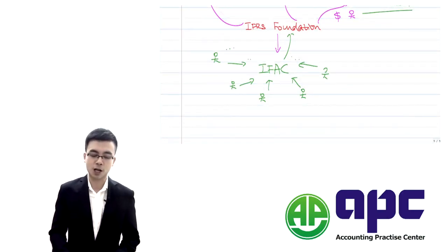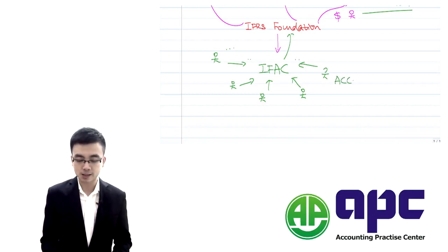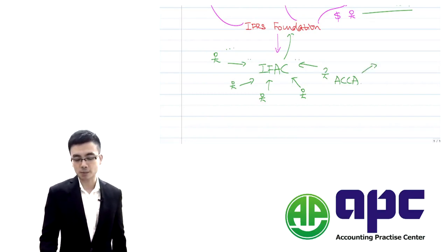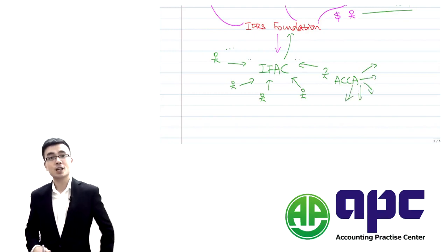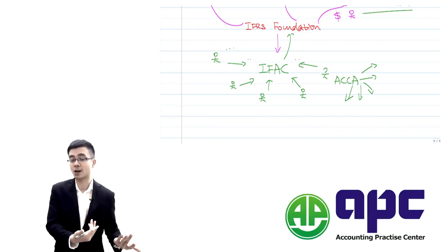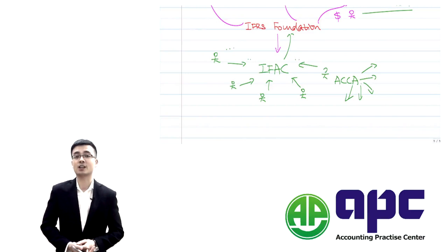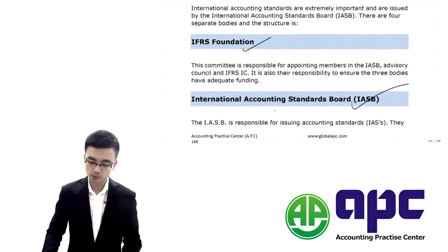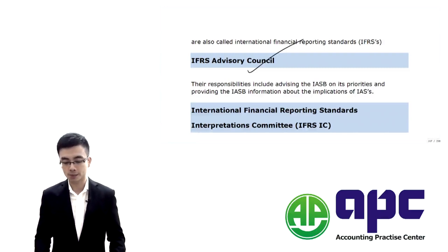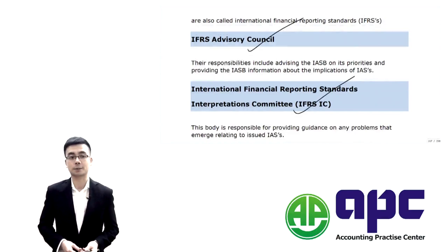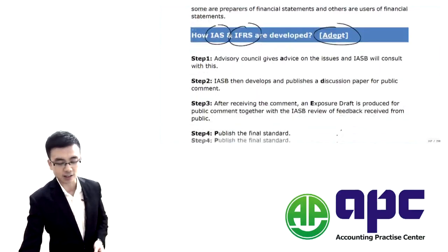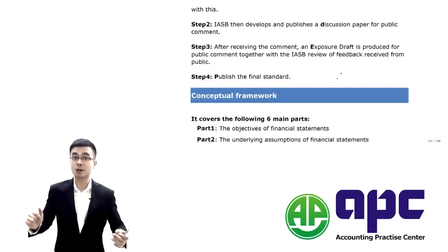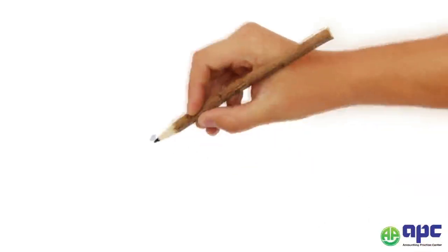Where does IFAC's money come from? It comes from its member bodies like ACCA, which is also a non-profit organisation. ACCA has its own members and students — students pay fees to ACCA, ACCA pays fees to IFAC, and IFAC pays fees to the IFRS Foundation. So we have the IFRS Foundation, the IASB, the Advisory Council, and the IFRS Interpretation Committee. That's the regulatory framework. Now let's focus on the Conceptual Framework.